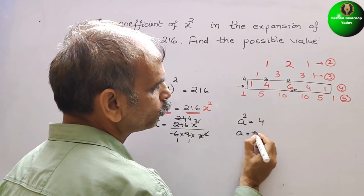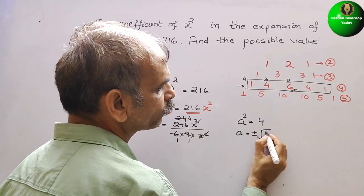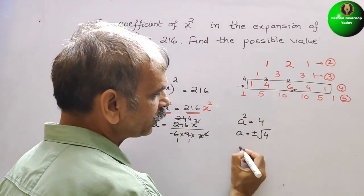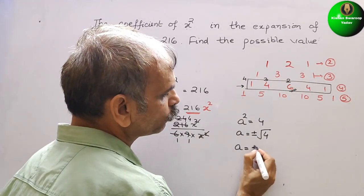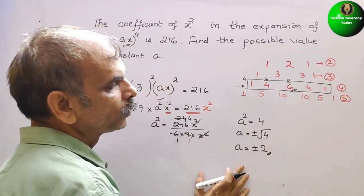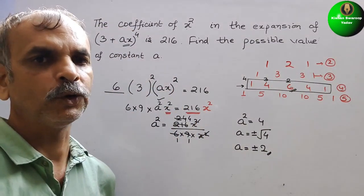Therefore, a is equal to plus minus √4. So this is nothing but a is equal to ±2. So like this we have to do it.